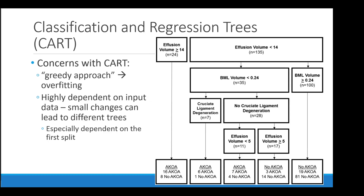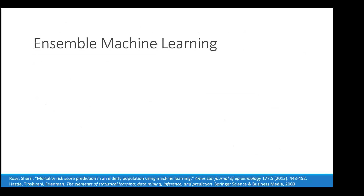However, CART has concerns: it's a greedy approach prone to overfitting — each decision is optimized to the dataset at that node with no looking back or forward. It's highly dependent on the input data, so small changes can lead to different trees, especially sensitive to the first split.